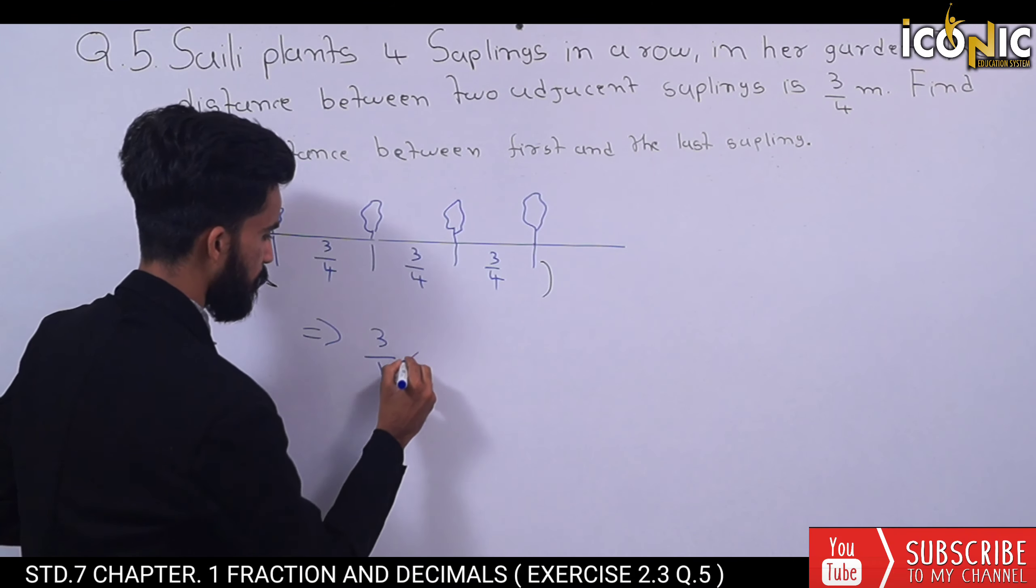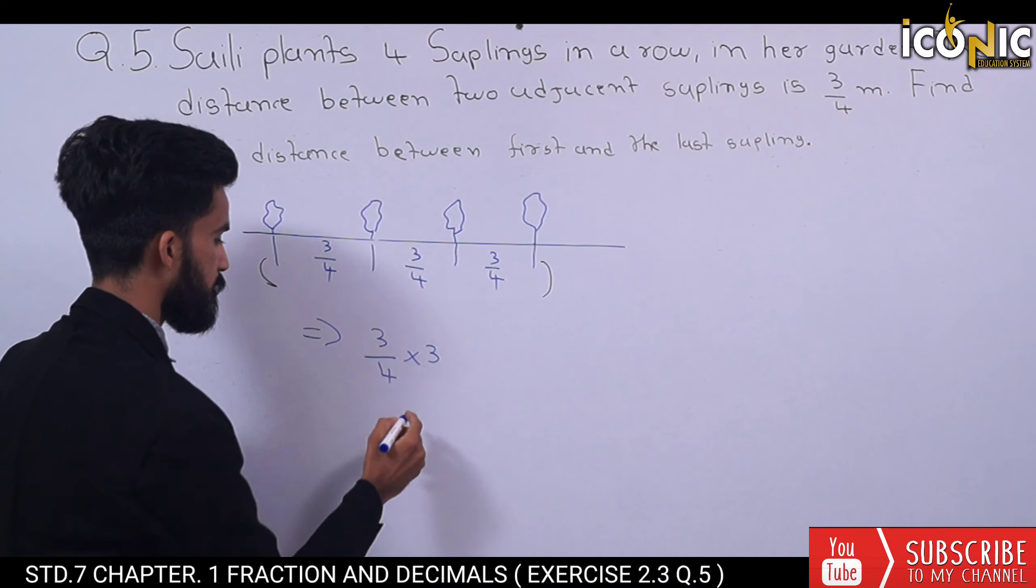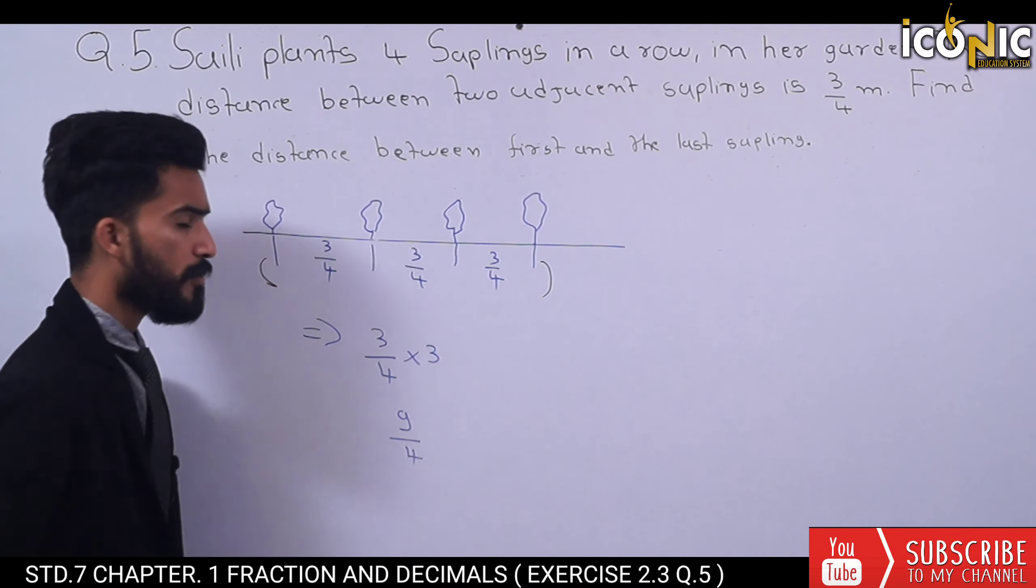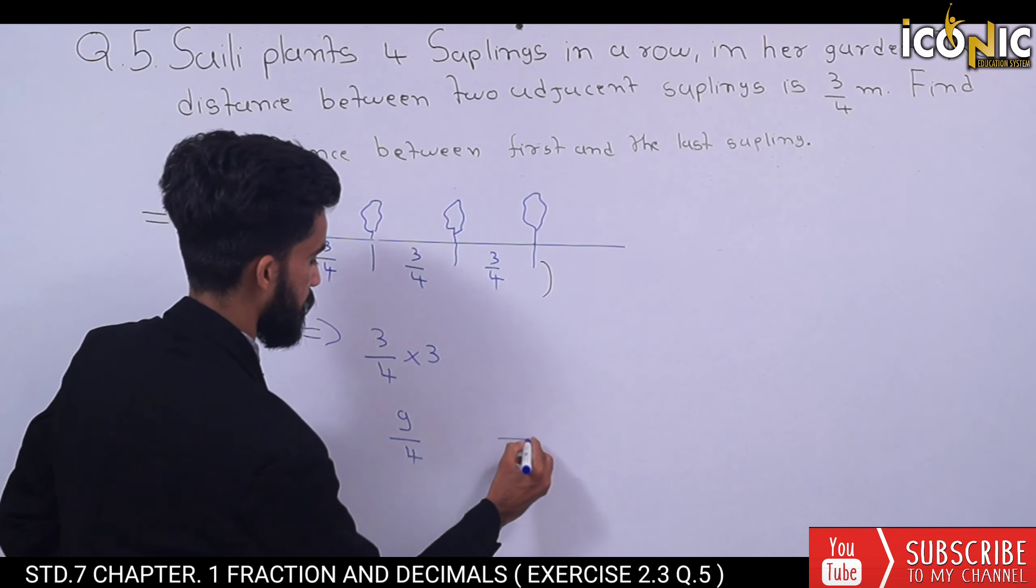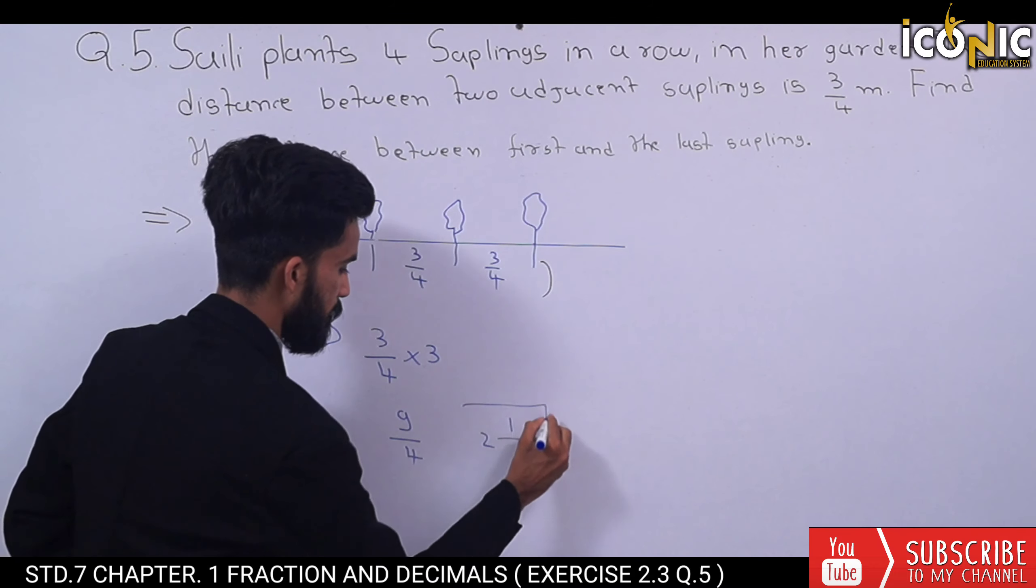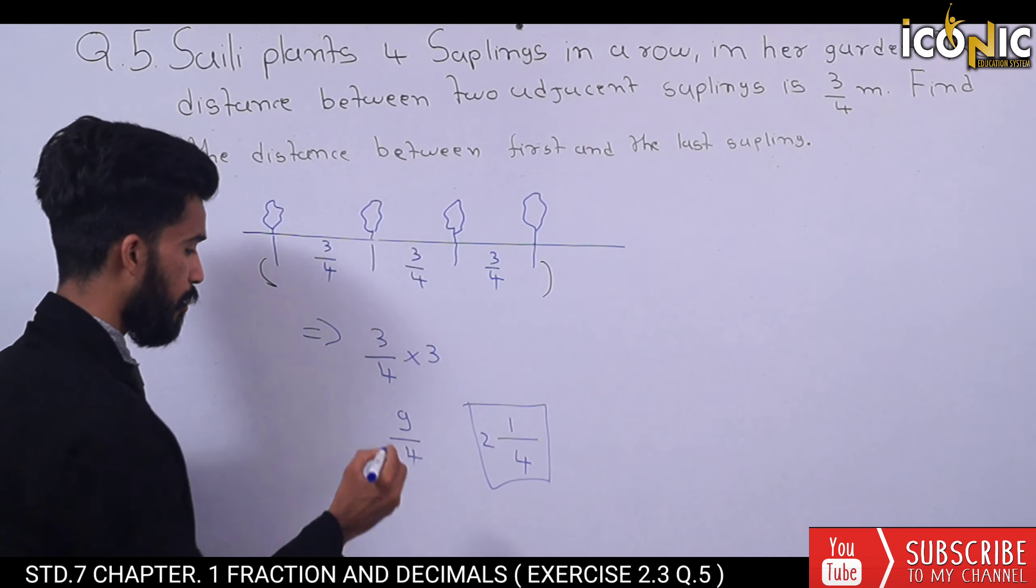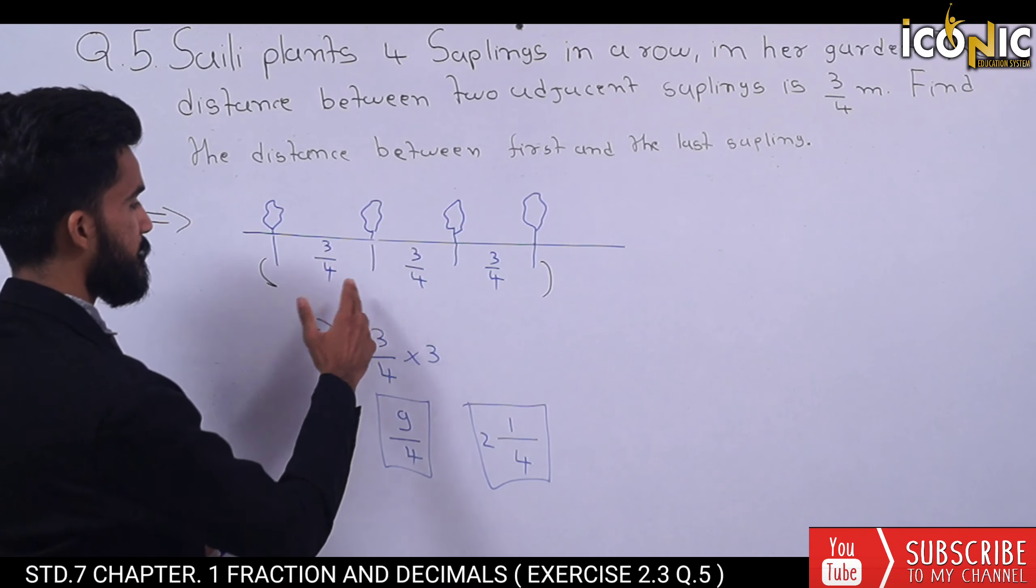The direct answer is 3/4 multiplied by 3, which equals 9/4. We can convert this to a mixed fraction: 2 and 1/4. So 9/4 is our answer.